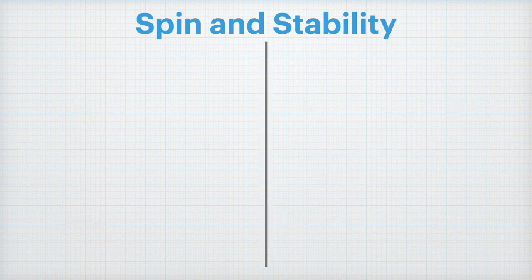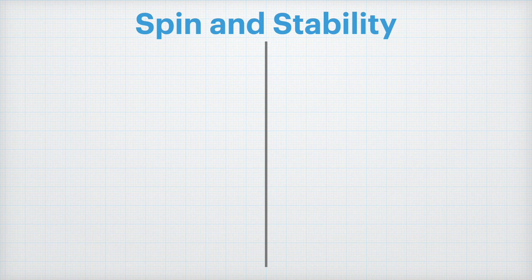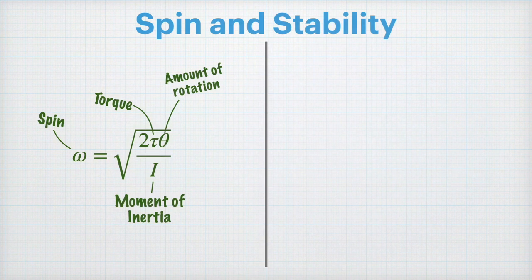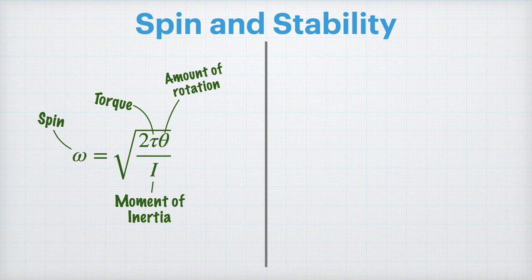But what does this mean for spin? Well I have an equation for spin right here. Let's label a few things to clear it up. Spin, that letter omega, is equal to the square root of 2 times the torque times the amount of rotation divided by the moment of inertia.